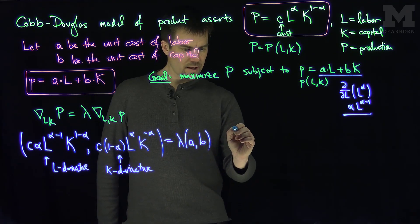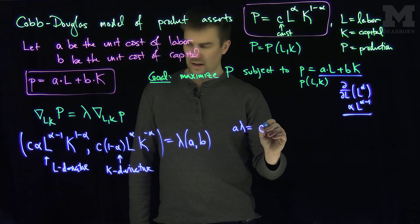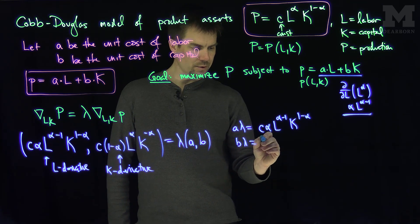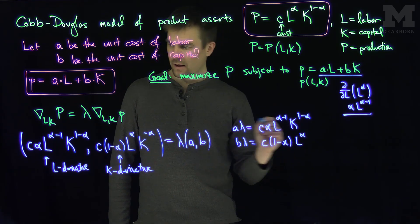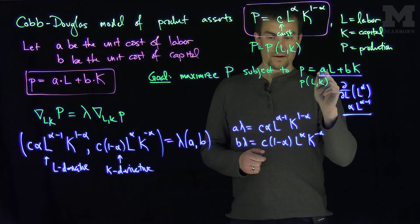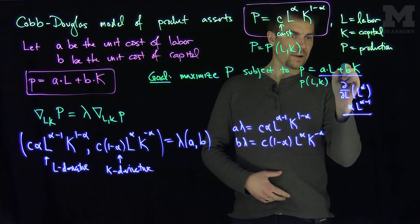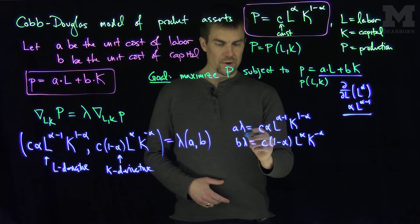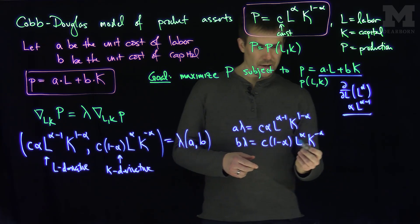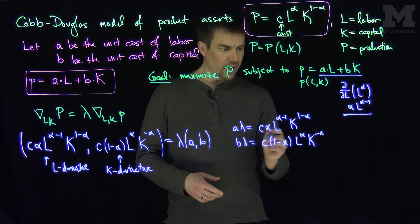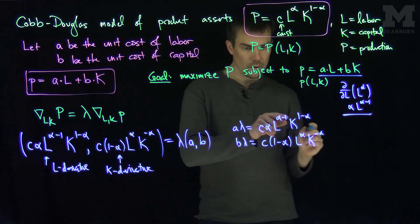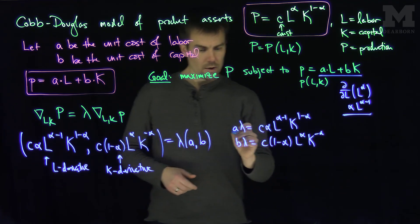From this we get two equations: A·λ = C·α·L^(α-1)·K^(1-α), and B·λ = C·(1-α)·L^α·K^(-α). We also have the constraint AL plus BK equals P. We can find lambda and the optimization by dividing these equations by each other to get lots of cancellations. Our last equation is P = AL + BK.